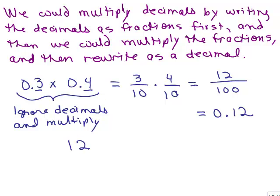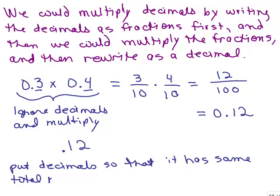After the decimal point, we've got to make sure our answer has the same number of total places. Put decimal so that it has the same total number of places as the original numbers.